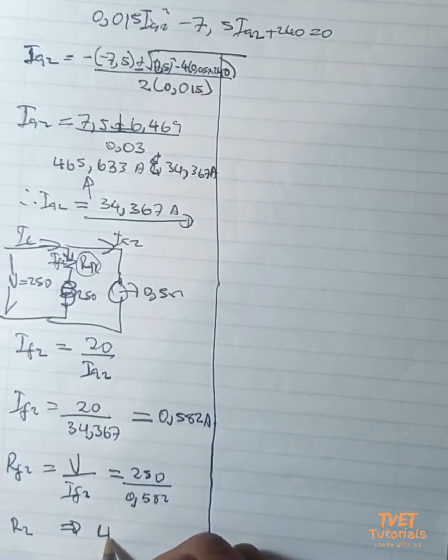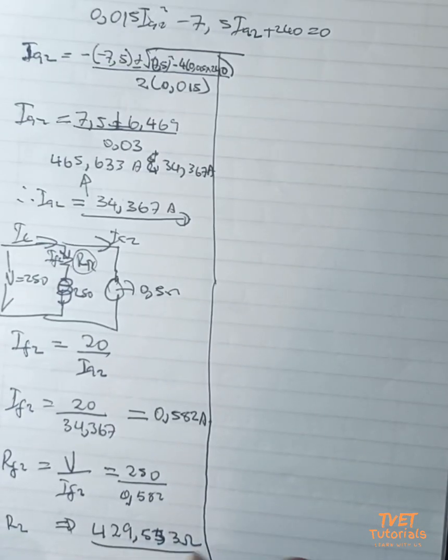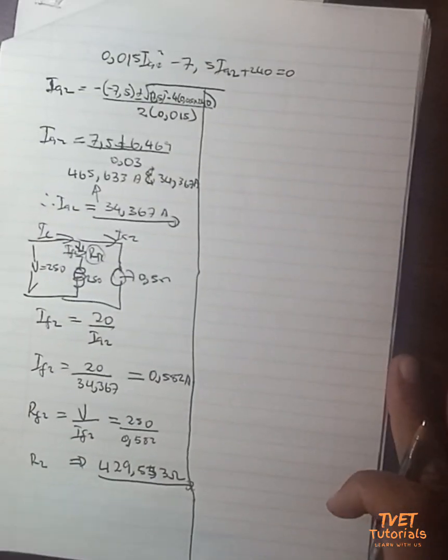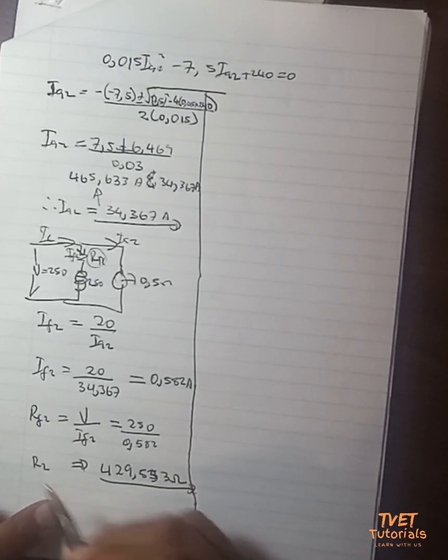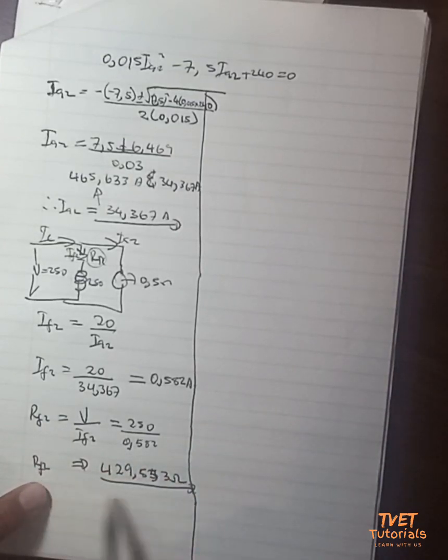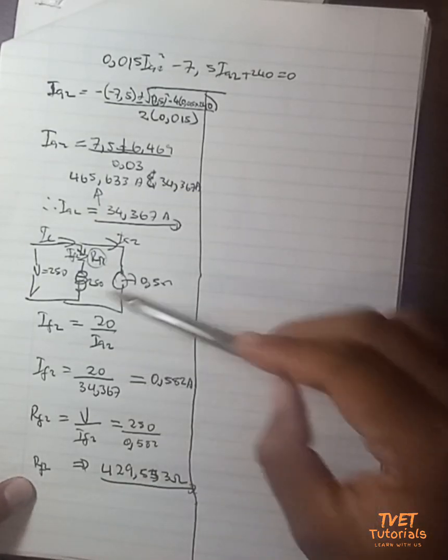R_f2 is then equal to 429.553 ohms. So R_f2 is then equal to 429.553 ohms, but this is now a combination of the unknown value R_x plus the known field resistance that we know.